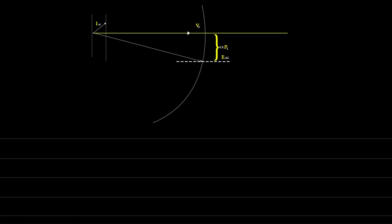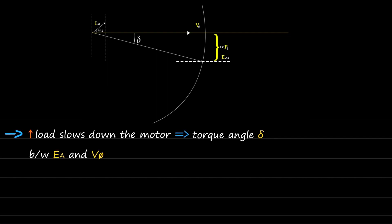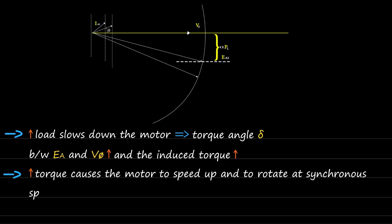Now, let's discuss the effects of load changes on synchronous motor. Increasing the load slows down the motor initially, due to which the torque angle delta between Ea and V phi increases, and the induced torque increases. This increase in torque causes the motor to speed up and to rotate at synchronous speed again, but this time with larger angle delta.